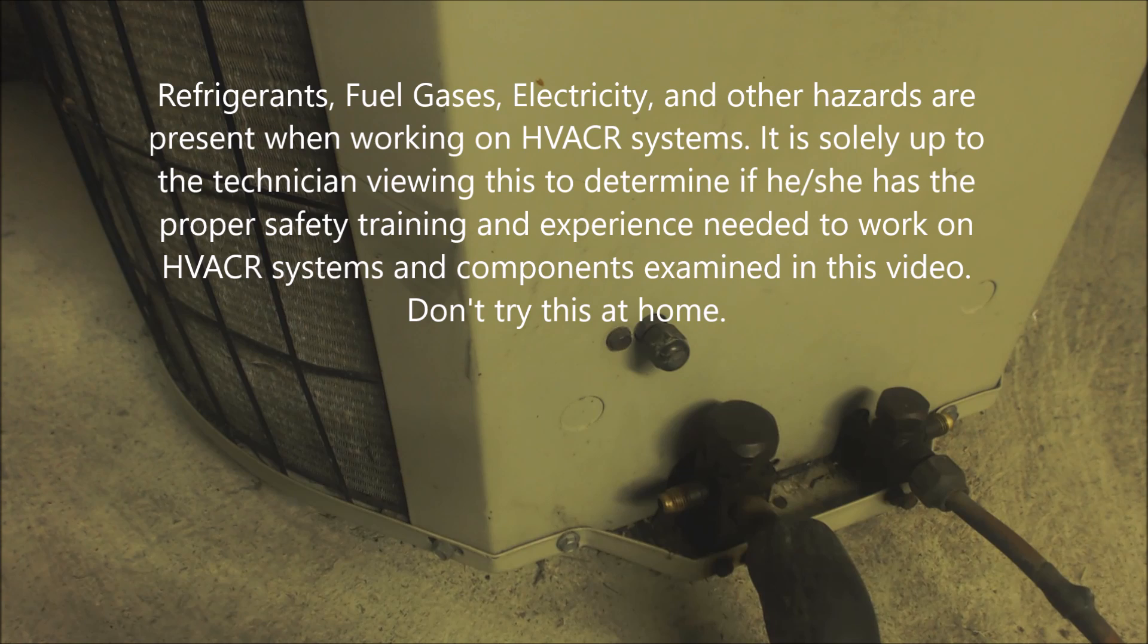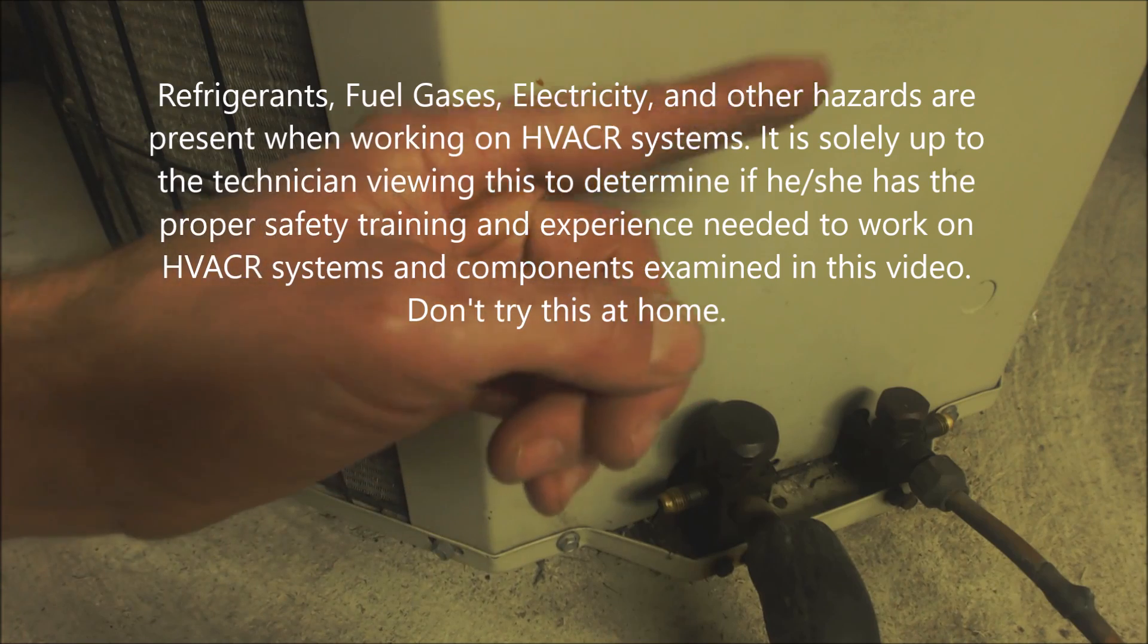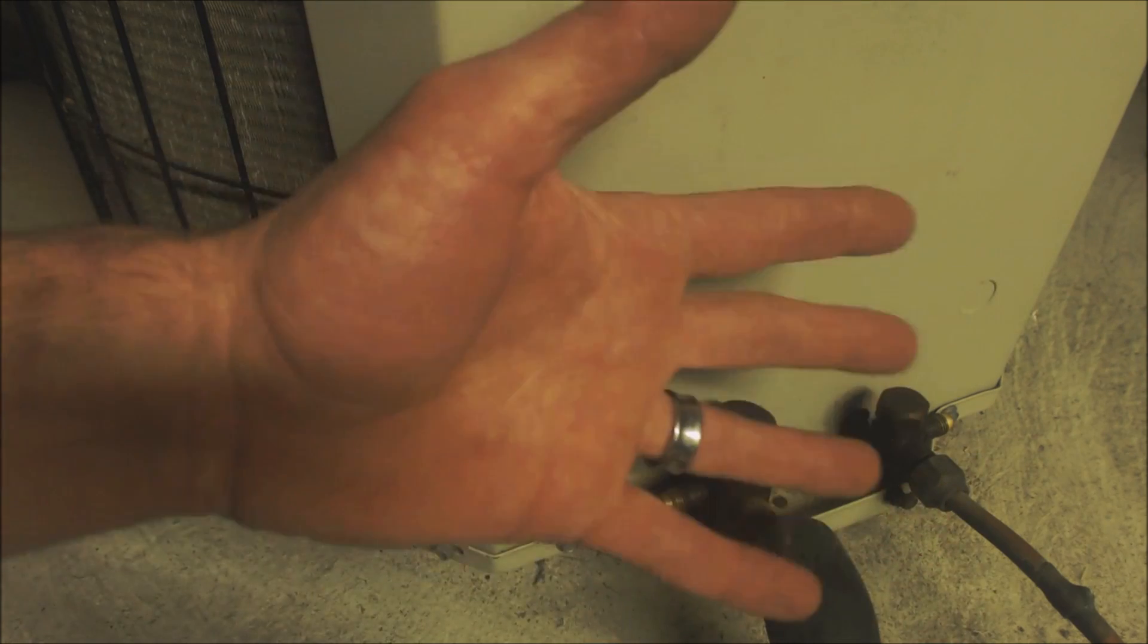Hey guys, this is AC Service Tech. Today I want to go over how to check a refrigerant charge in subcooling when there's no rating plate. Say the rating plate is completely sun-bleached or gone. How do you tell what refrigerant's in the system and what subcooling do you set it at for efficiency?